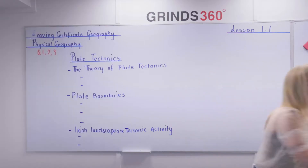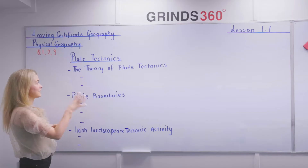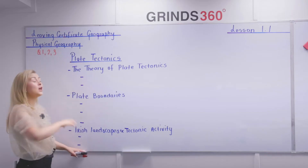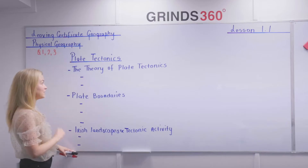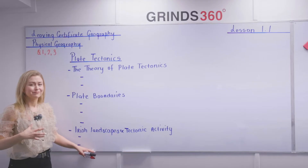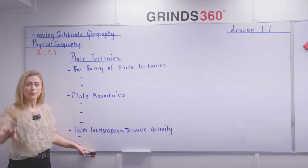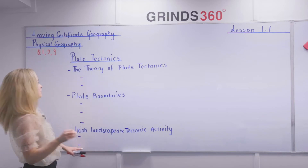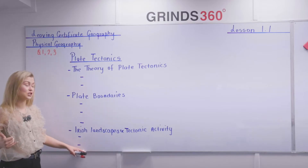Looking at plate tectonics, this is a physical geography question which can appear in both short questions and questions one, two, and three on your Leaving Cert exam. It does appear as a short question, but what students are usually very concerned about is the essay style questions. There are about five essay style questions we see here, and some of them can be recycled into more than one chapter.